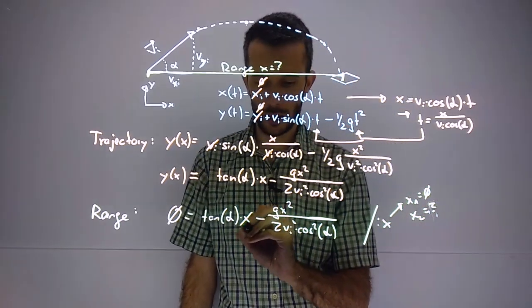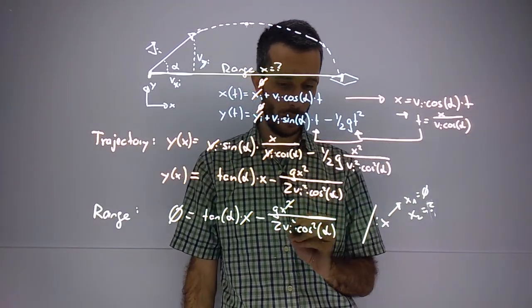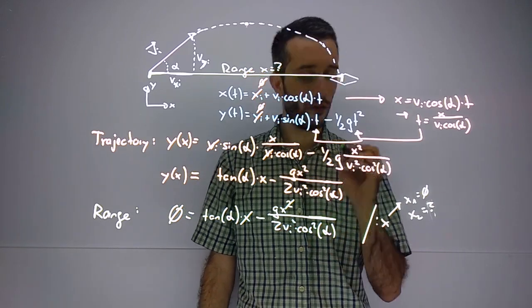x1 equals 0 was one of the solutions; we're interested in the other one. So if I divide by x, this gets already quite simpler, and now all I have to do is solve this for x.